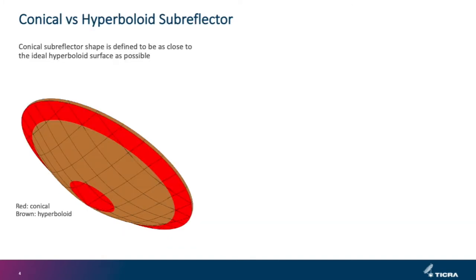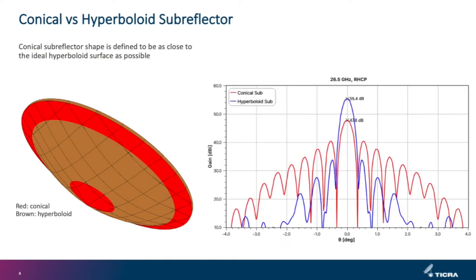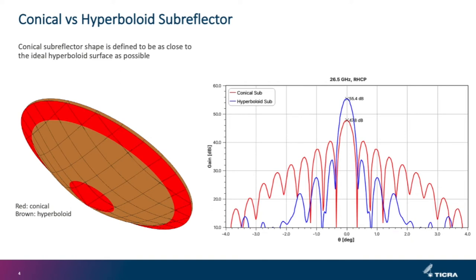In our antenna system, we have defined the conical subreflector to be as close to the ideal hyperboloid as possible. The red is the conical subreflector and the brown is the hyperboloid. Even though the shapes are close to each other, there is actually a significant degradation in performance when using the conical subreflector. The red curve shows the radiation from the antenna system using the conical subreflector, whereas the blue curve is when using the hyperboloid subreflector. The idea is to use a modulated FSS over the conical surface to compensate for the non-optimal illumination by shaping the reflected beam from the subreflector — essentially, we are considering a curved FSS-backed reflector array.